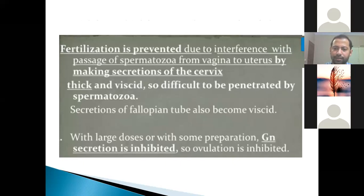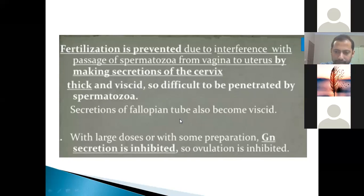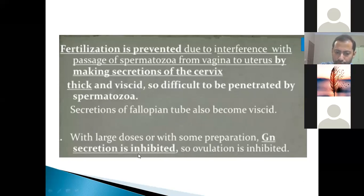Fertilization is prevented due to interference with the passage of spermatozoa from the vagina to the uterus, by making secretions of the cervix thick and viscid so they are difficult to be penetrated by spermatozoa. Secretions of the fallopian tube also become viscid. With large doses, gonadotropin secretion is also inhibited, so ovulation is inhibited.